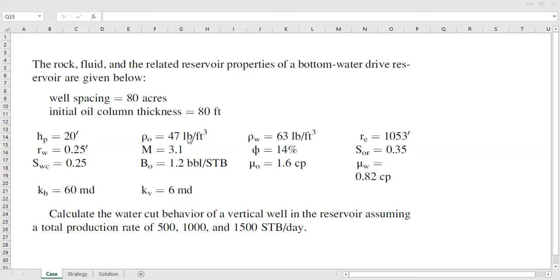Oil density 47 pounds per cubic feet and mobility ratio M of 3.1. Oil formation volume factor Bo is 1.2 barrels per stock tank barrel. Density of water 63 pounds per cubic feet. Porosity 14 percent and oil viscosity of 1.6 centipoise. Drainage radius or you can also call it reservoir radius, the drainage radius of the well, is 1053 feet. Residual oil saturation Sor is 0.35 and viscosity of water 0.82 centipoise. So the oil is more viscous than the water.